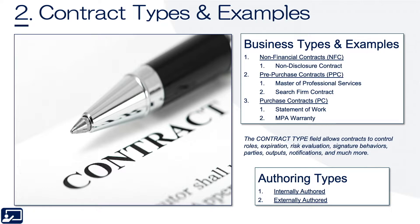Oftentimes, the last two contract types have what's called hierarchy, meaning that the first contract lays out base terms and conditions, and they may be overwritten at the purchase contract level.